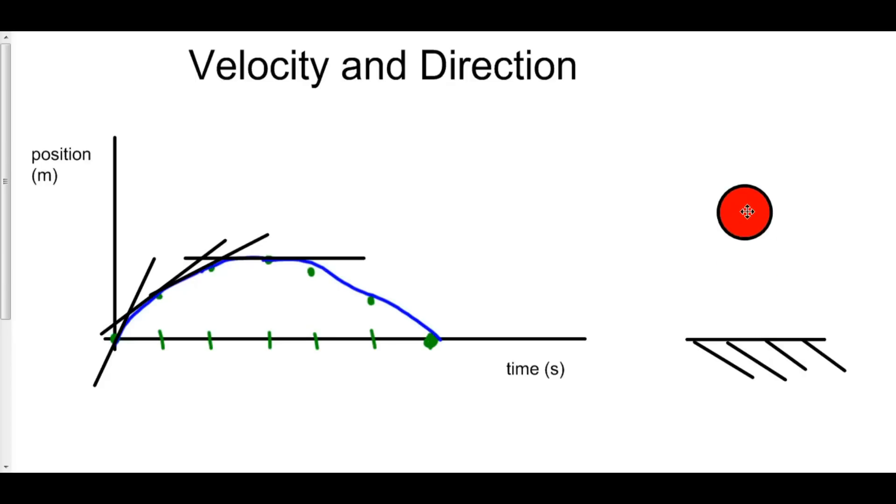And as it comes back down, our velocity starts off a bit slow, but negative. You'll notice that the velocity is now negative. This is the negative direction. Why? Because the ball is coming down.